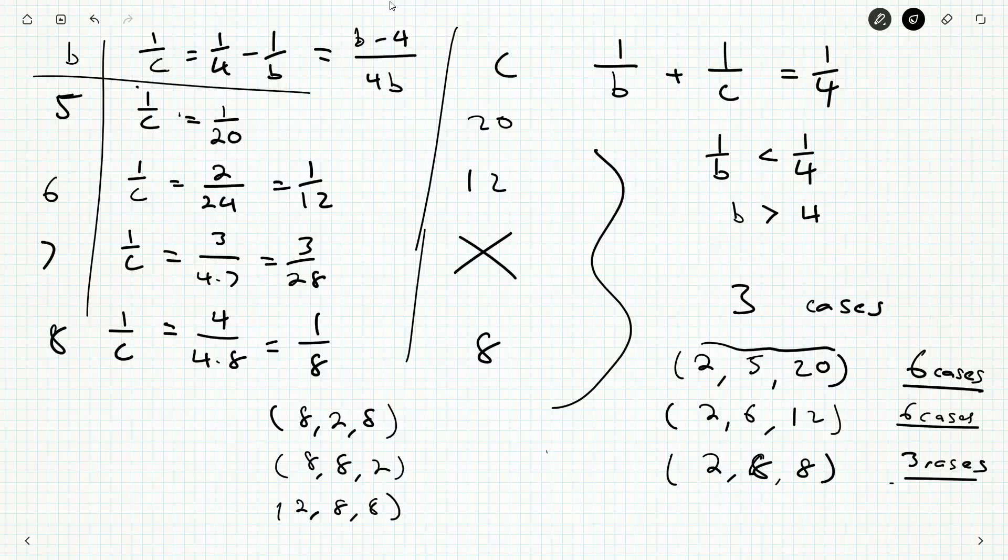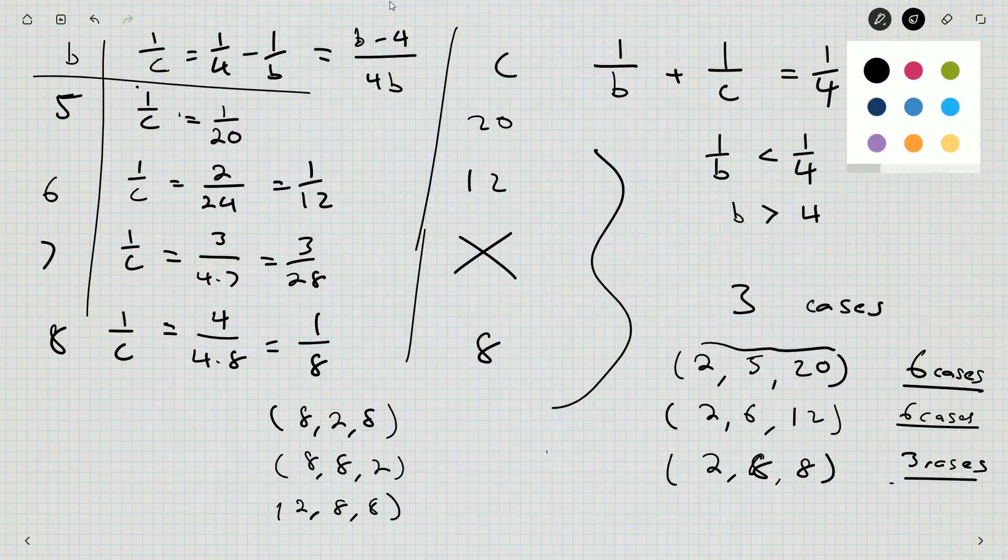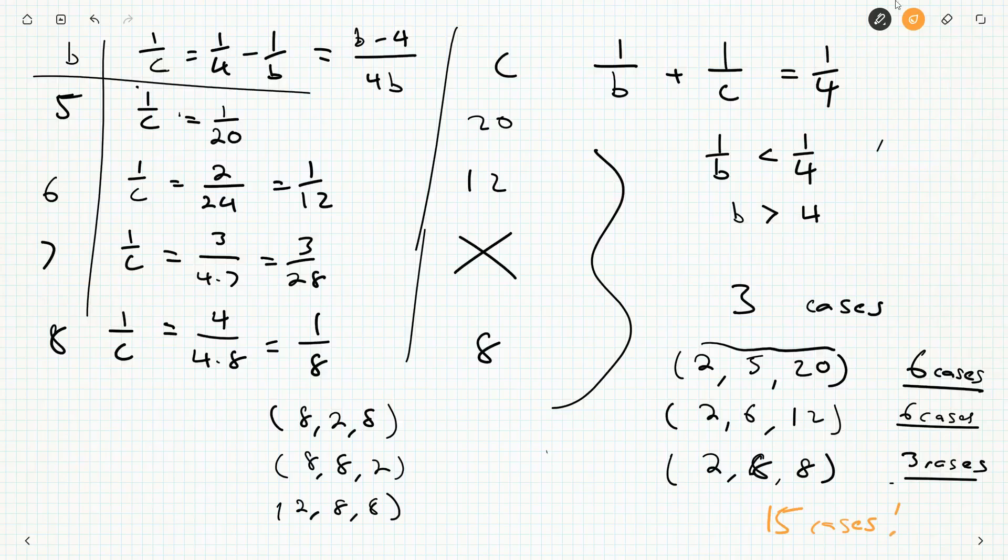There are three possibilities, so that's why three cases. Six, six, and three is 15 cases. So that's what happens when A is 2. Well, I've got 3 and 4 left to consider. 4 is not going to be that hard, but we will go through it.